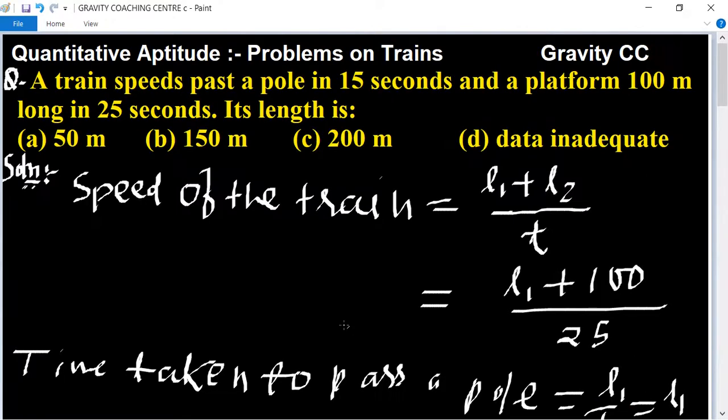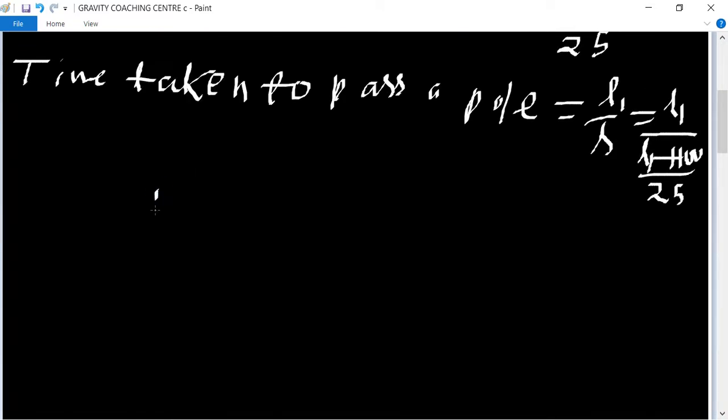Time taken to pass a pole is 15 seconds, so we put here 15 equal to L1 upon L1 plus 100 upon 25.